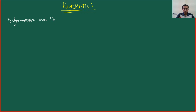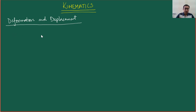The first section we are going to cover is called deformation and displacement. In this section, we will focus our attention on developing a very general mathematical theory or framework by which we can describe the deformation and displacement of a general three-dimensional body. The first thing we are going to consider is a general three-dimensional body like this, which will be in the initial or undeformed state.